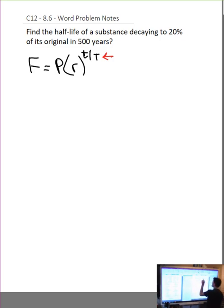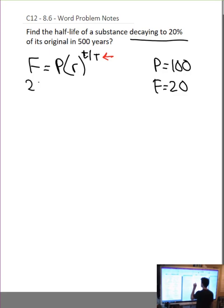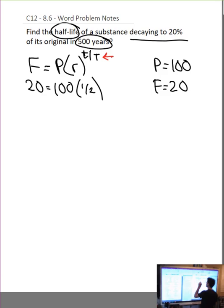So, if I'm decaying to 20%, well, I'm going to arbitrarily start off with a present value of 100, and then I'll have a future value of 20%, not to get confused with decaying 20%, meaning we'd have a future value of 80. So, if we have a future value of 20, and a present value of 100, our rate is a half-life, which is one half. Now, the time that's actually happened is 500. That goes on the top. And capital T, what we're looking for, goes on the bottom.